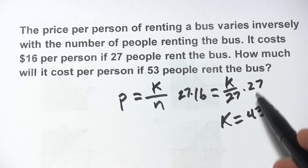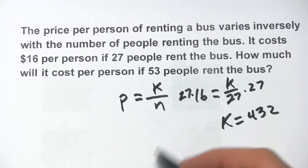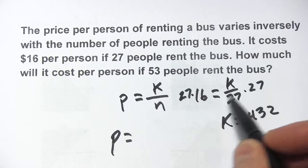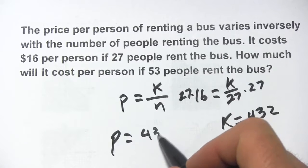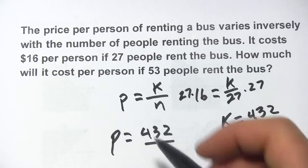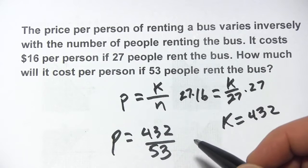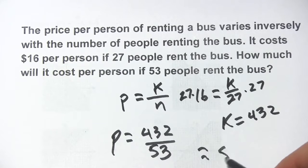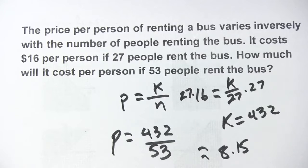Then it says, how much will it cost per person if 53 people rent the bus? Well, we can put it back in here. What's the cost, the price? We don't know. The constant of variation is 432, and the number of people is 53. So we get 432 divided by 53, and you get something close to $8.15 per person.